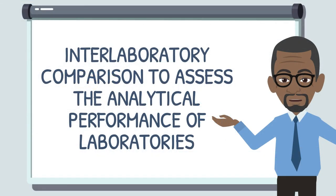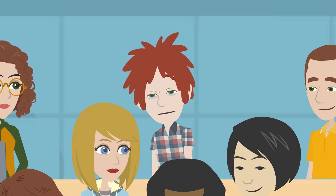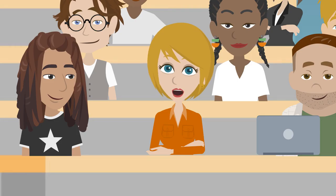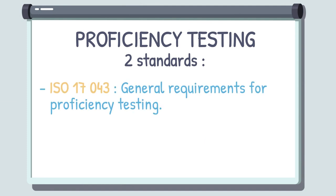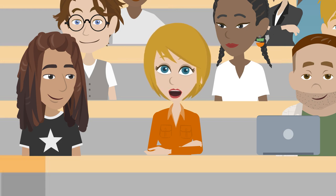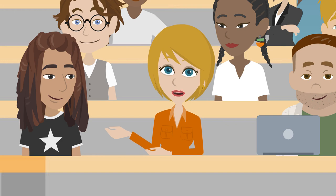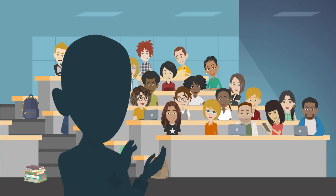If the purpose is to assess the laboratory's performance, what is the interlaboratory comparison called? It's called proficiency testing. It is regulated by two standards: ISO 17043, General Requirements for Proficiency Testing, and ISO 13528, Statistical Methods for Use in Proficiency Testing by Interlaboratory Comparison. The laboratories compared report their results in the same way they would to their customers. The purpose is to compare the laboratories, assessing their proficiency. Well done, Adele — your internship at BIPPEA has been well understood.